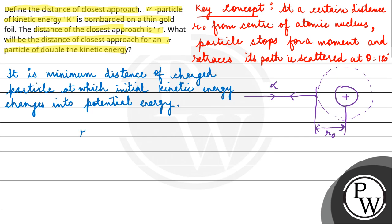The distance of closest approach is given by the relation 1 upon 4 pi epsilon naught times 2 z e squared upon k, where z is the atomic number of the nucleus, e is the charge on the electron, and k is the kinetic energy of the particle.